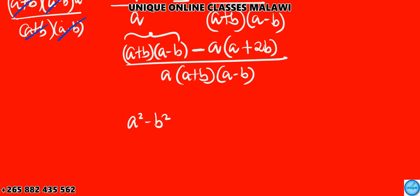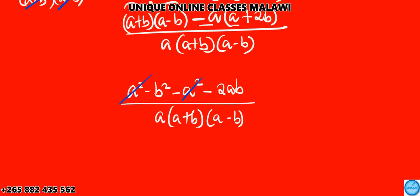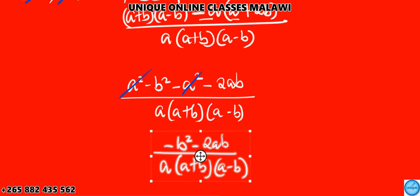So we have a squared minus b squared. We now have minus a squared, then minus 2ab. Then here, a times the bracket a plus b times a minus b. Next, like terms together. A squared and minus a squared cancel to zero, negative b squared minus 2ab over a times a plus b times a minus b.